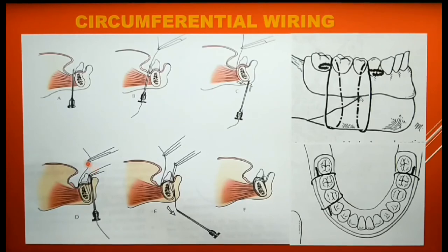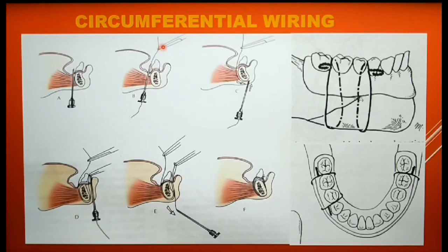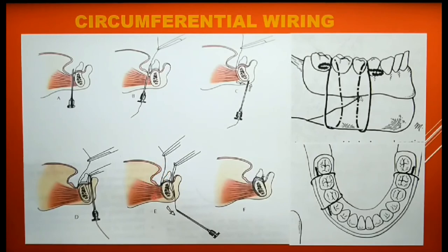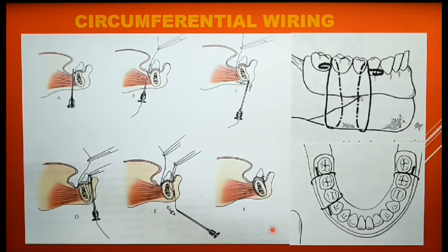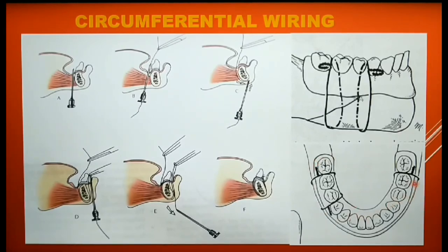All this while, one end of the wire on the lingual aspect is still secured with an artery forcep or a wire holder. Once the tip is out labially, the wire is pulled out, thus circumferencing the mandible. The catheter is then retrieved out through the same incision. In this way, circumferential wiring stabilizes the fracture and is then followed by intermaxillary fixation. This is how a completed wiring looks.